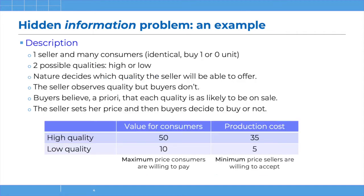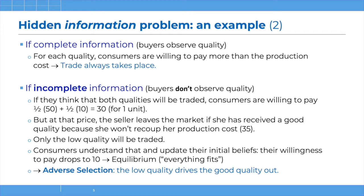If consumers believe that with 100% certainty the products on the market will be low quality, then they're willing to pay 10. And 10 is large enough to convince low quality sellers to participate. So the equilibrium is that only low quality sellers show up on the market, and they will actually sell their goods because the minimum price of 5 is lower than what consumers are willing to pay, which is 10. We call this situation adverse selection because the low quality drives the good quality out of the market. There is a selection of qualities, but it's adverse because only the low quality stays — and this is inefficient.